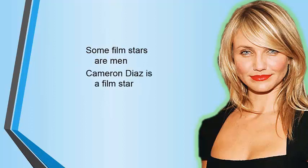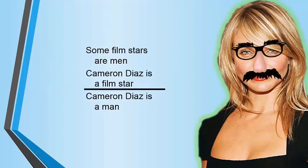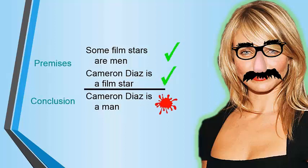Consider the following batch of statements: some film stars are men; Cameron Diaz is a film star; and therefore Cameron Diaz is a man. Well, if these are premises and conclusions, what we find out is that the premise statements turn out true, and the conclusion statement turns out to be false. In this sort of case, something seems to have gone wrong with the inference — the leap from the premise statements to the conclusion statements. And what went right or wrong in these inferences is the subject matter for logic in this course.